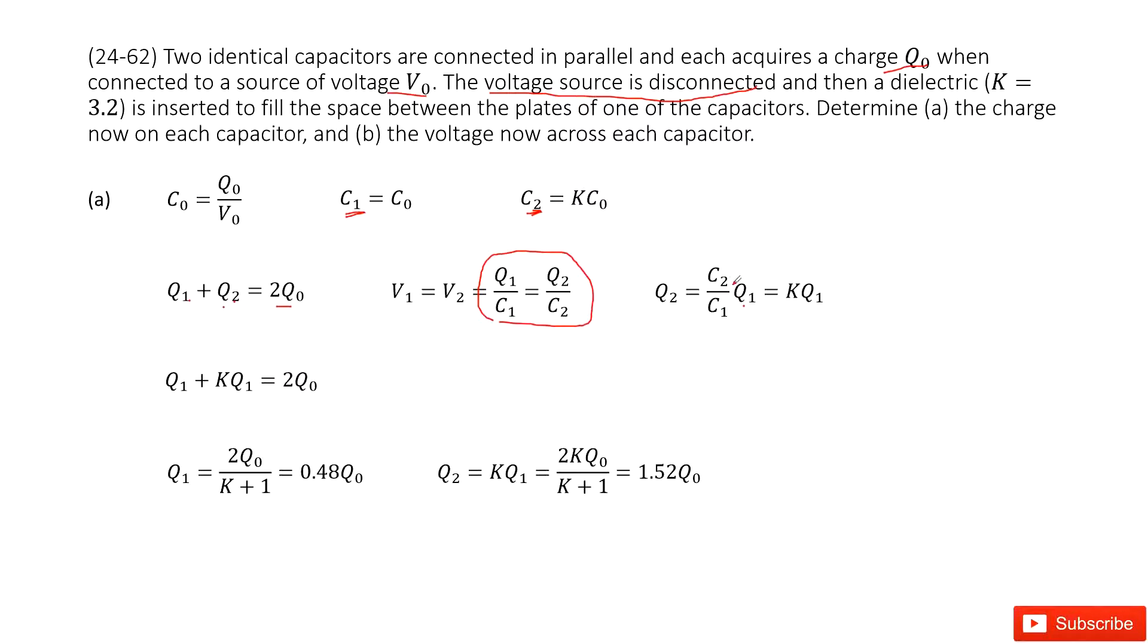Now you can see the ratio C₂ over C₁ is just the dielectric constant K. You input C₁ and C₂ inside. Now you can see in this function, you can replace Q₂ as K times Q₁ and solve this equation. You can get the function for Q₁ and Q₂.